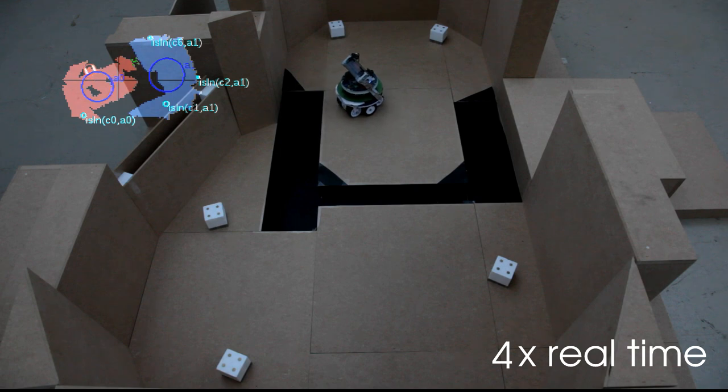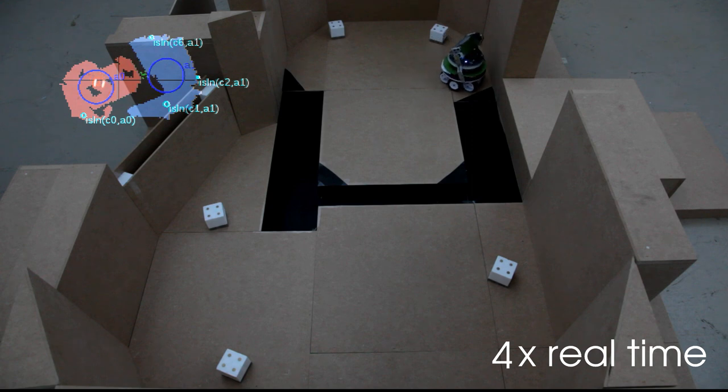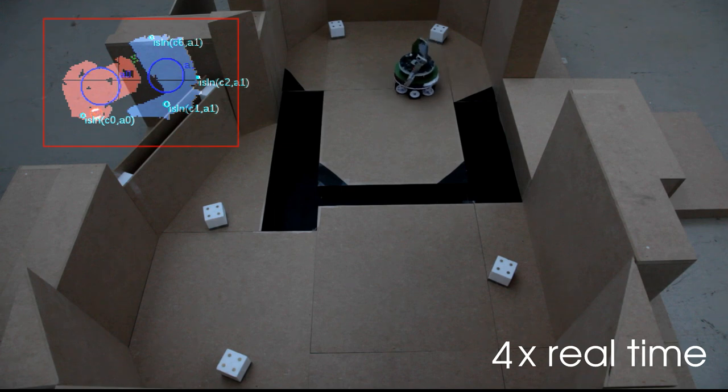This allows the robot to build a semantic map of the environment in which the robot grounds symbols representing the areas, the valley, and the resources. You can see this map at the top left of the screen.